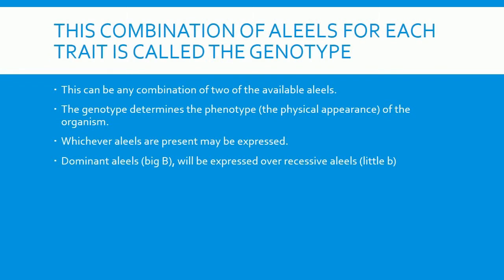This combination of alleles for each trait is called the genotype. This can be any combination of two of the available alleles. The genotype determines the phenotype — the physical appearance of the organism.